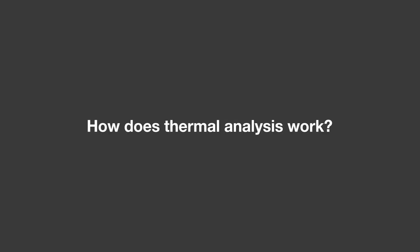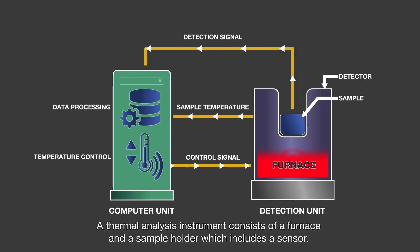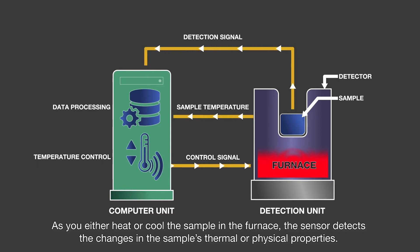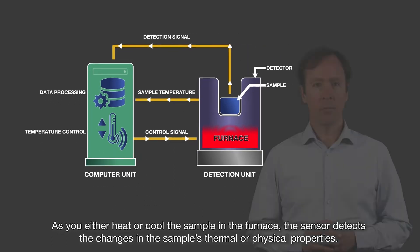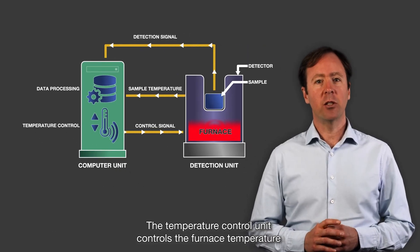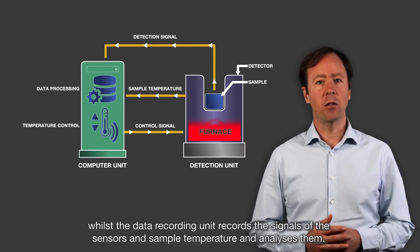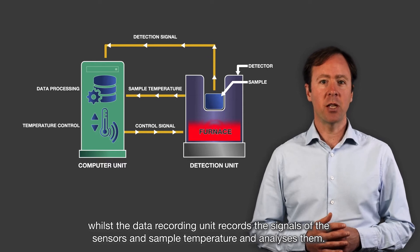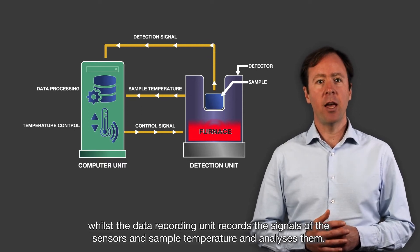How does thermal analysis work? A thermal analysis instrument consists of a furnace and a sample holder, which includes a sensor. As you either heat or cool the sample in the furnace, the sensor detects the changes in the sample's thermal or physical properties. The temperature control unit controls the furnace temperature, whilst the data recording unit records the signal of the sensors and sample temperature and analyzes them.